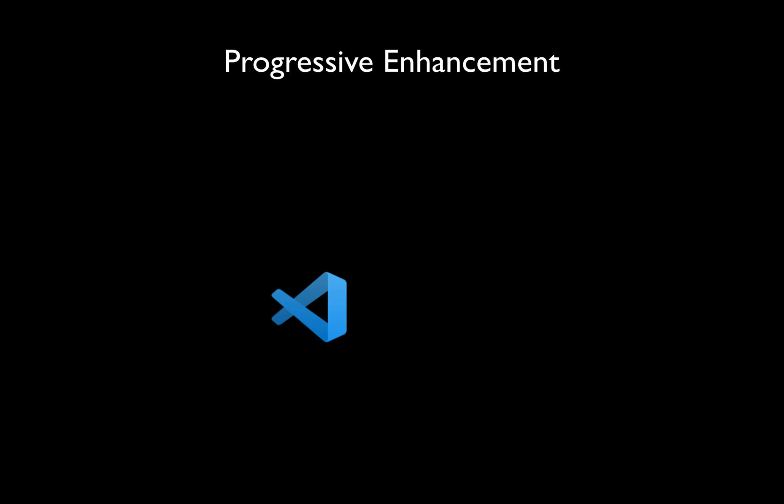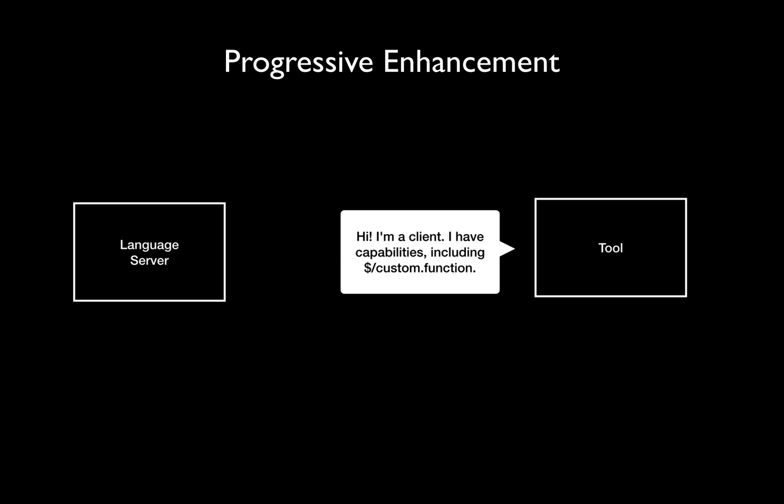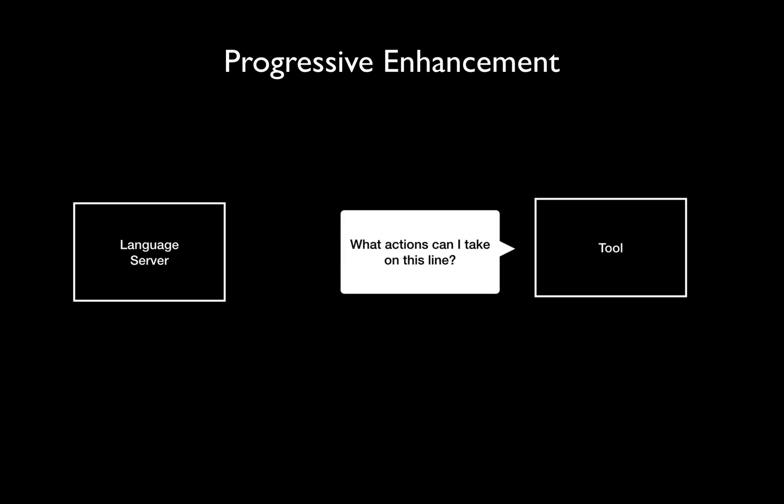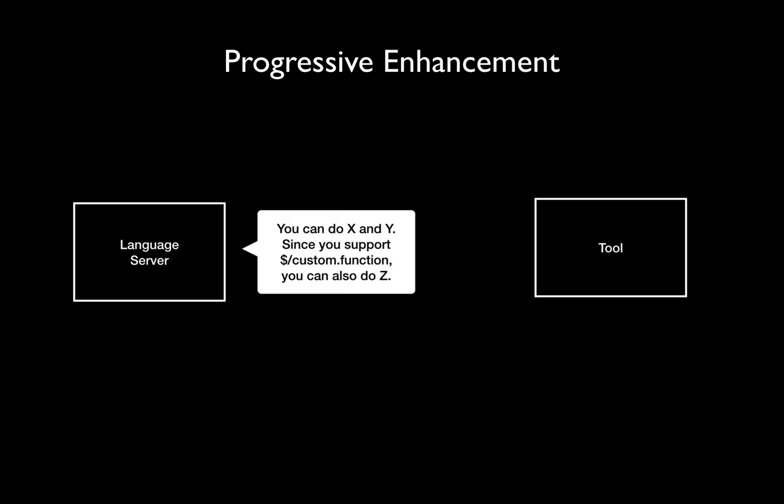You may worry that building your functionality on the language server protocol means that you're stuck with the lowest common denominator of things that every text editor supports, or things explicitly covered by the LSP. Fortunately, this isn't the case. We can use progressive enhancement to introduce functionality not currently supported by the language server protocol. To do this, you'll need to write some minimal per-tool glue code, but most of the code will live in the language server itself. During initialization, a tool will let the language server know what capabilities it supports, and the language server responds with what capabilities it has.